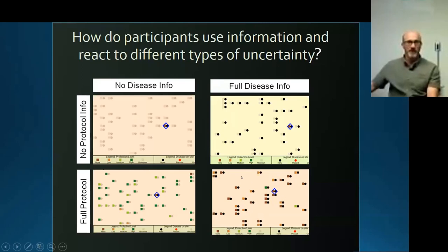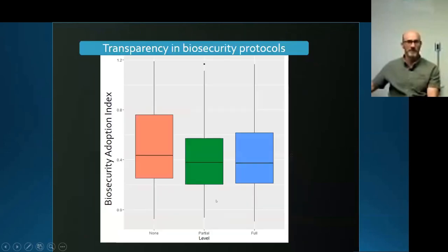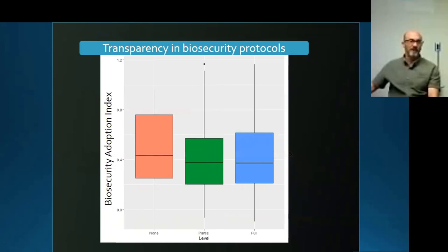This is a system of farms in the area where disease can spread in a number of ways, generally through biosecurity practices and distance. Interestingly, when we tell people what other people are doing in the system, that's when we actually see those individuals investing the least money in biosecurity.